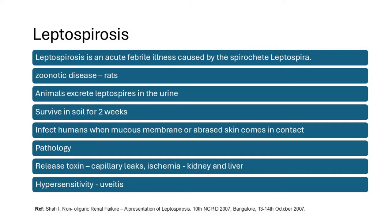Leptospirosis is an acute febrile illness caused by the spirochete Leptospira — a zoonotic disease. Leptospira are present in many mammals, especially rodents and rats. These animals excrete leptospira in their urine, which can survive in the soil for weeks. When humans walk in contaminated soil and the mucous membrane or a skin abrasion comes in contact, the leptospires invade into the skin and mucous membrane.